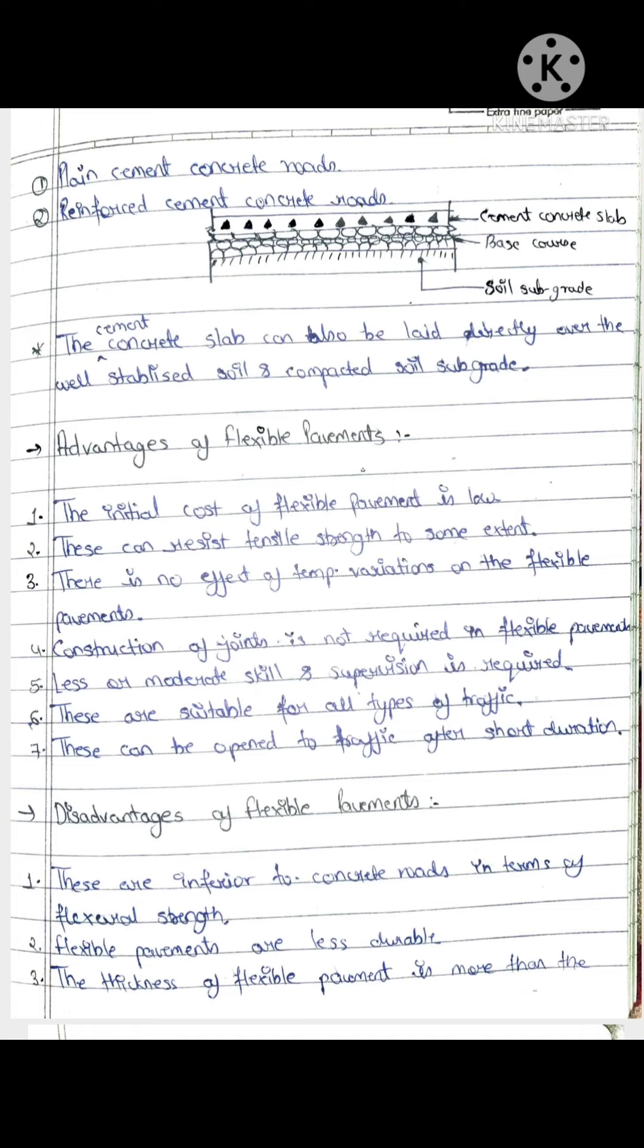For the cement concrete slab, you have a cement mixture to create the slab. This is also a type of rigid pavement. In the diagram you can see subgrade at bottom, then base course, then cement concrete slab at top.